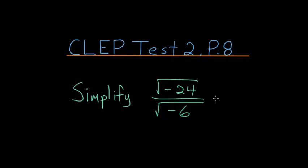So we can rewrite this numerator as the square root of negative 6 multiplied by 4. And this is divided by the square root of negative 6.